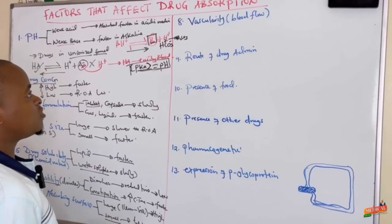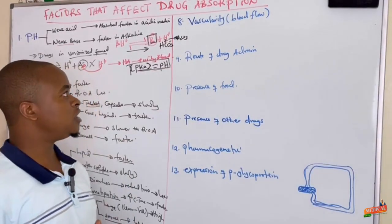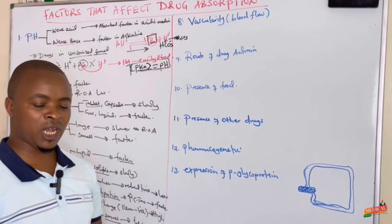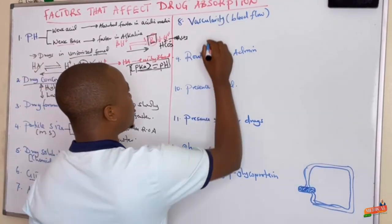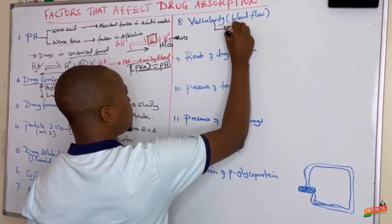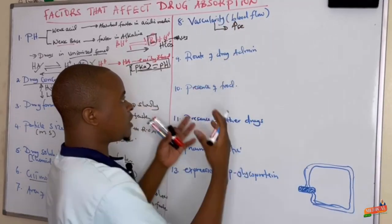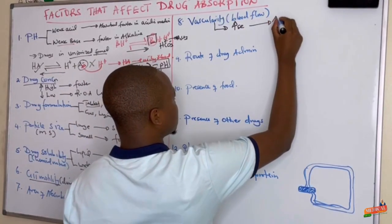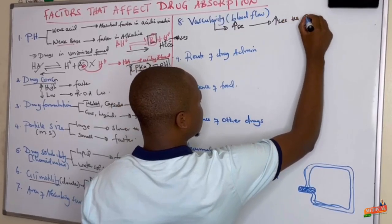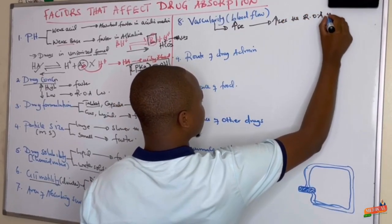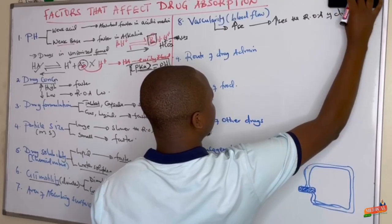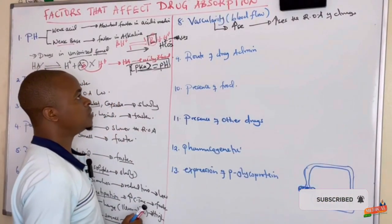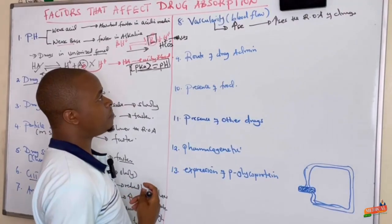Factor eight is vascularity — that is blood supply — which refers to increased blood flow to the absorbing surface. When there is increased vascularity and much blood flow to the absorbing surface, the rate of absorption of drugs increases, because more blood coming means more of the drug will be absorbed compared to low blood supply.